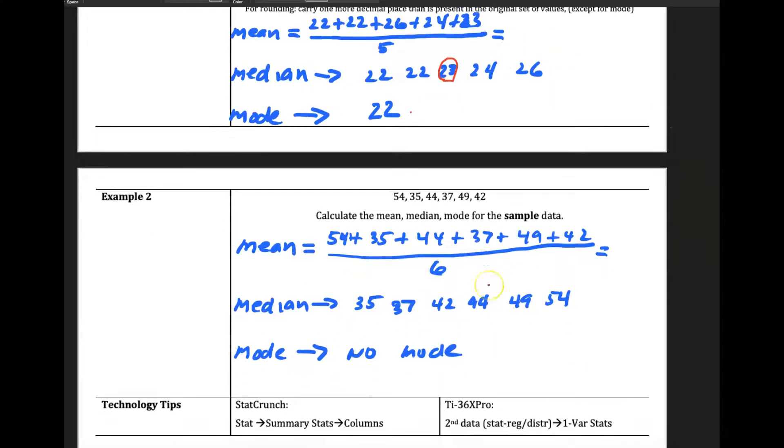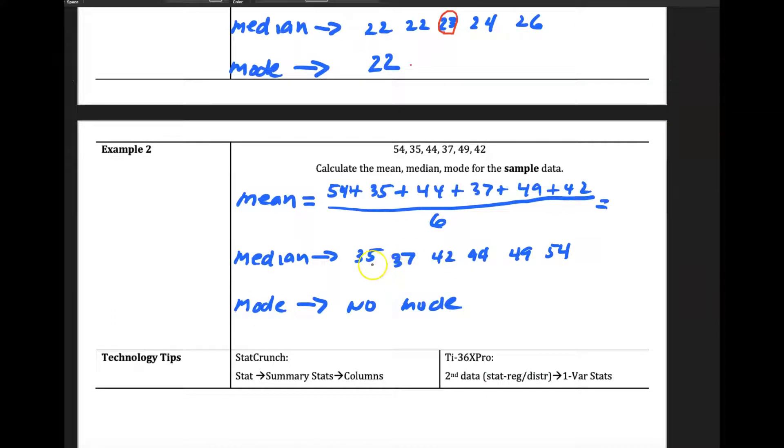Looking at this example here, notice the median again, the mean is you've added them and divide by how many you have. The median is always interesting because in this case, there's an even amount of values. The median is right here. So in this case, the median for this data set would be 43. What you do is when there's an even amount, you look for the value that's in the middle. And this one has no mode.